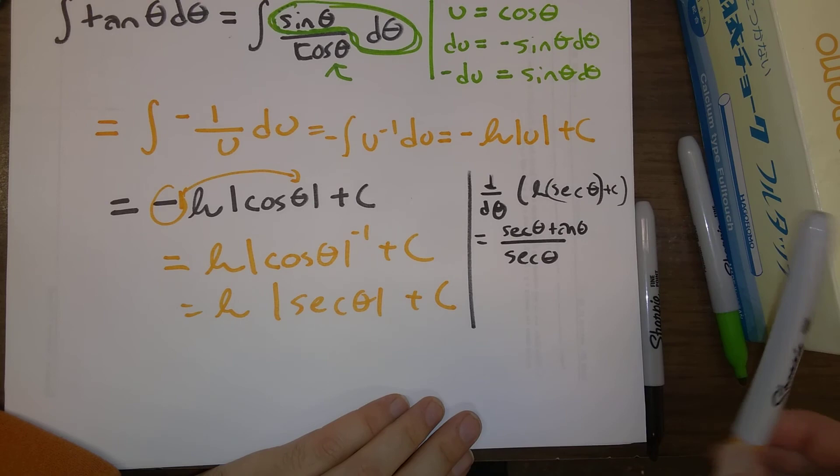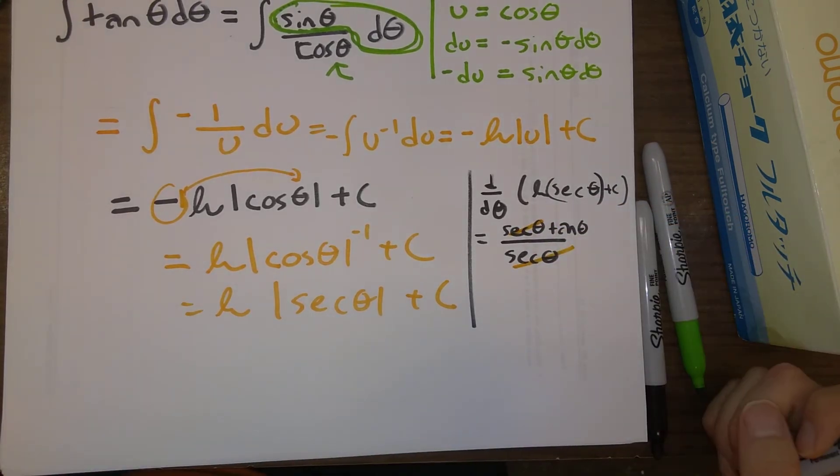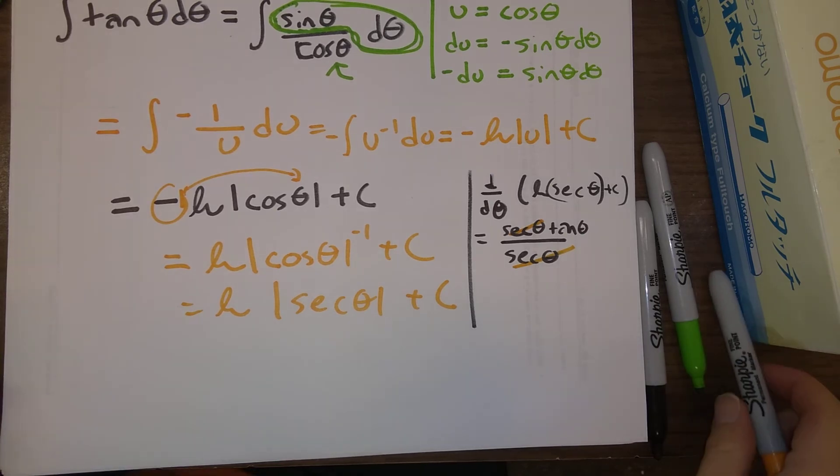The derivative of that is, of course, plus 0. Two factors of secant theta cancel out, and sure enough, we are back to tangent theta. So, everything is on the up and up.